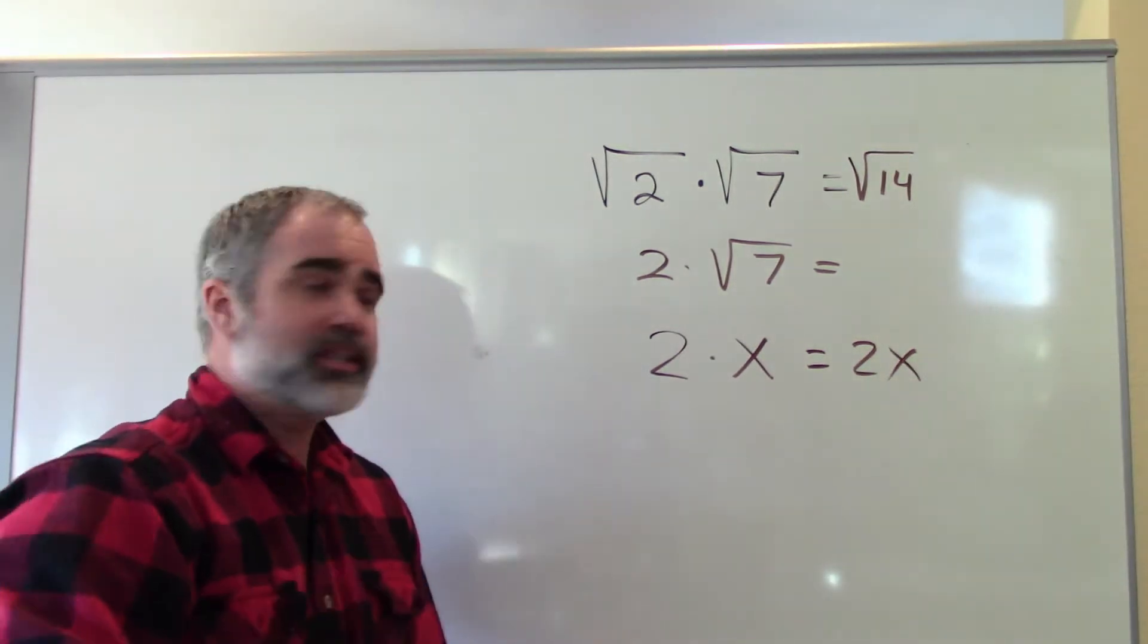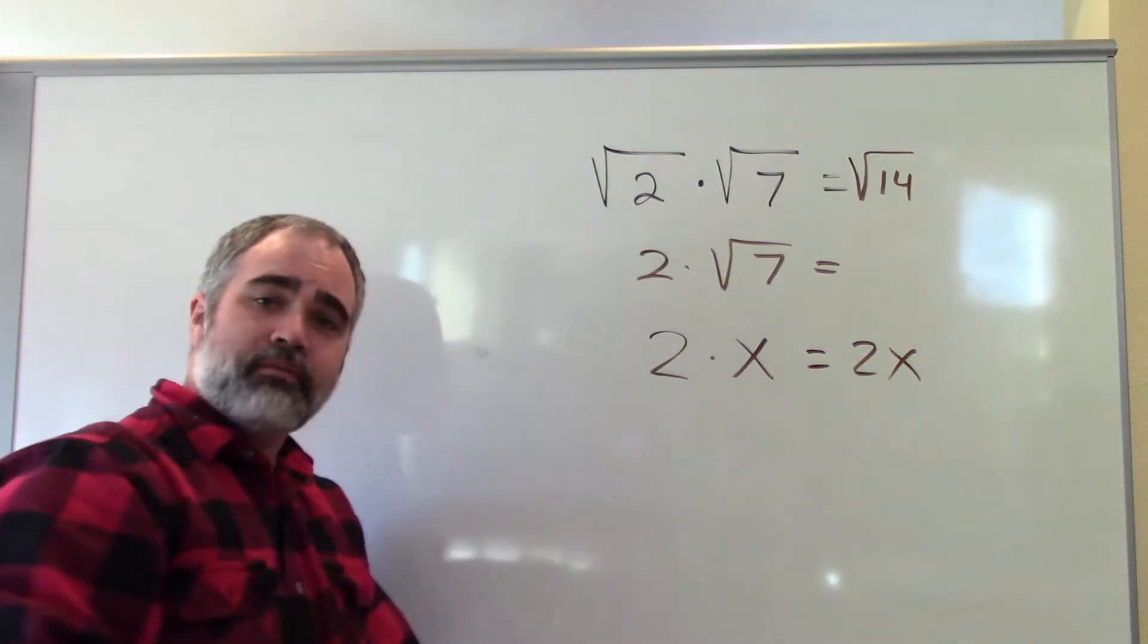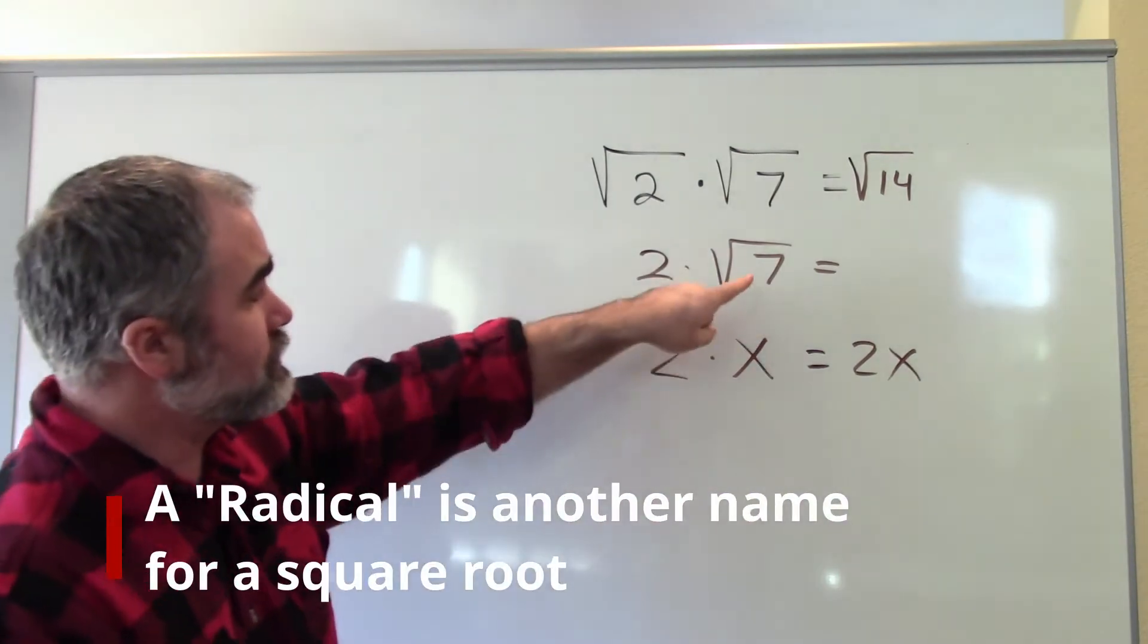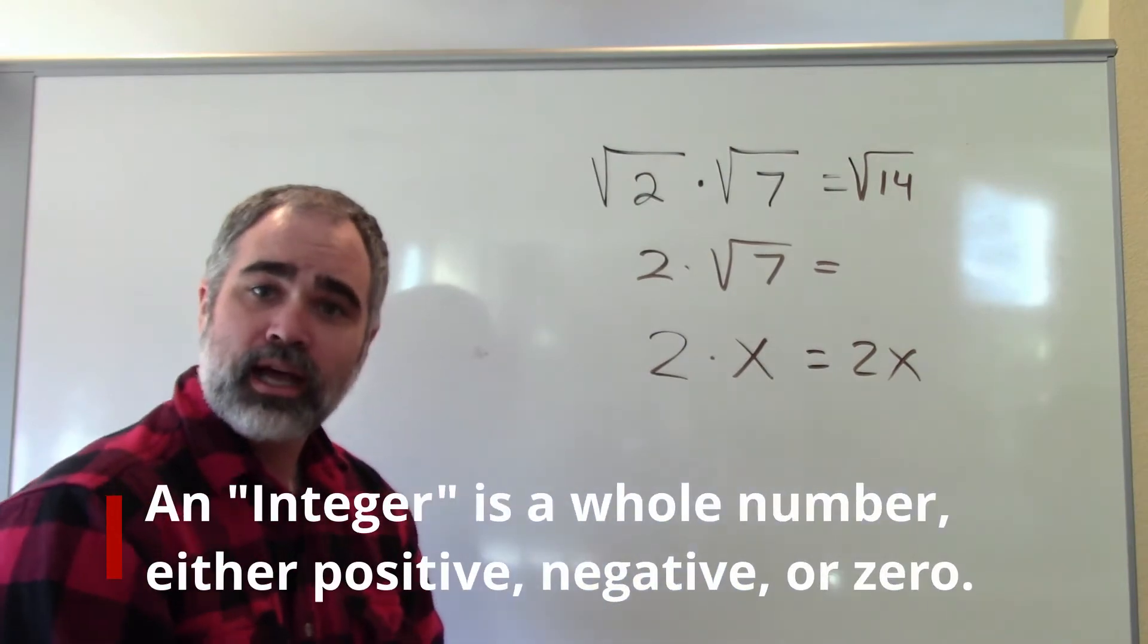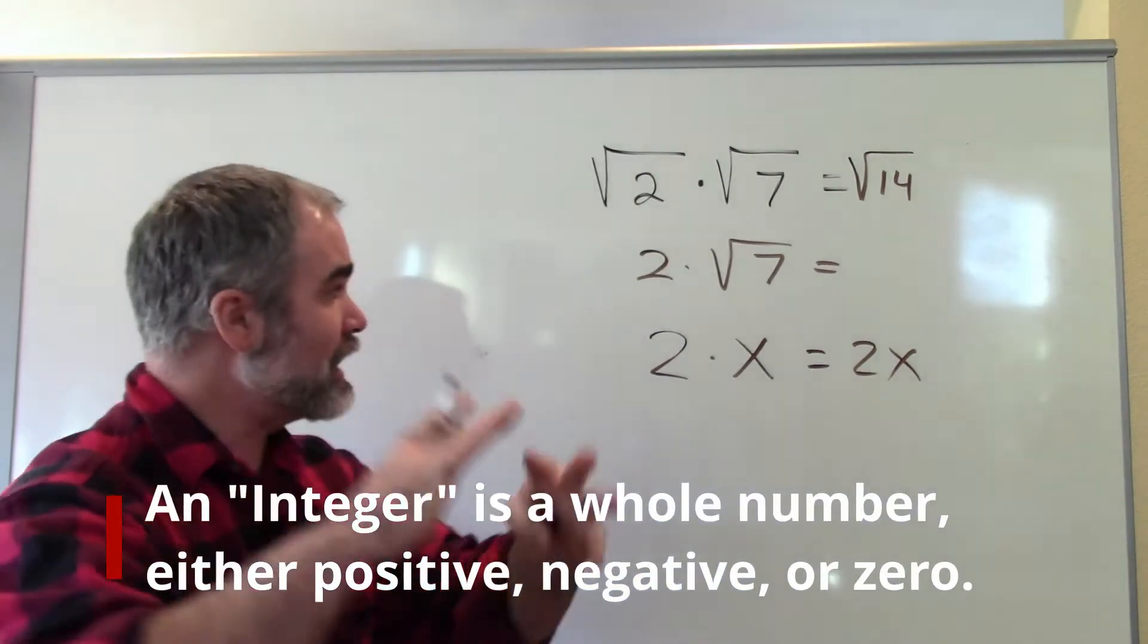The same process happens here. 2 times the square root of 7, they're different kinds of numbers. This is a square root or radical. This is a whole number or integer. They're different kinds of numbers, so I can't put them together.